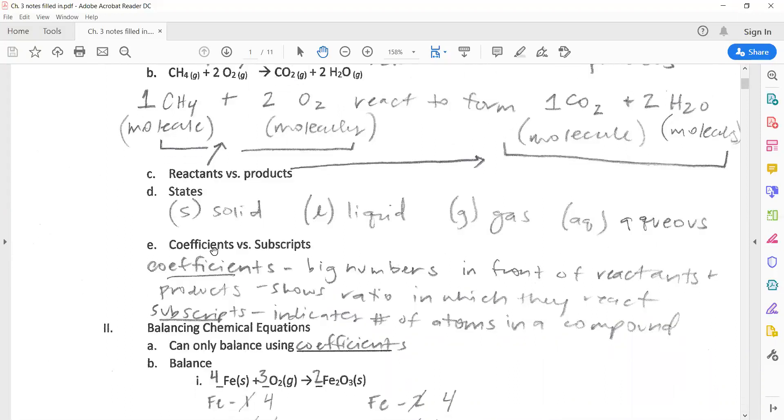To be clear here between coefficients and subscripts: Coefficients are the big numbers that are in front of the reactants and products. It only tells you the ratio in which they react. Whereas subscripts are these little numbers that are found in the formulas and that tells you how many atoms are in a compound. So this little four here would be a subscript. It tells you that there are four hydrogens and only one carbon in that compound.